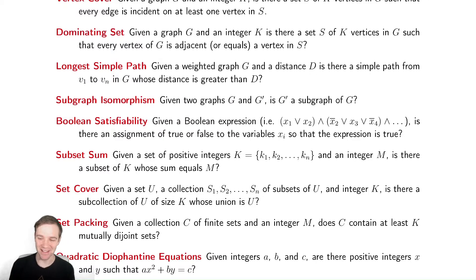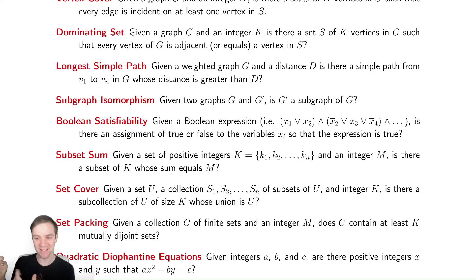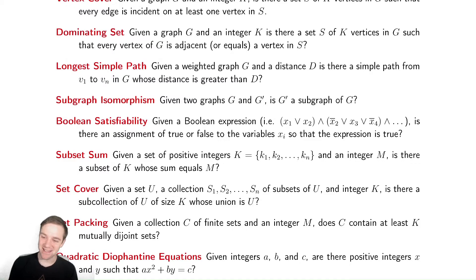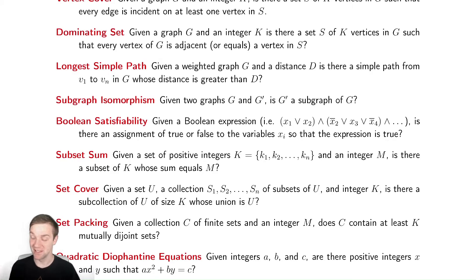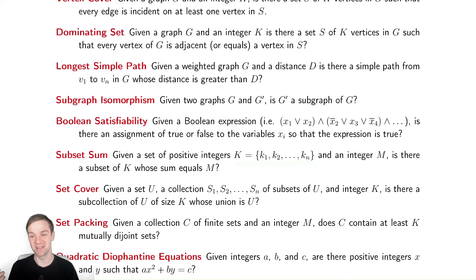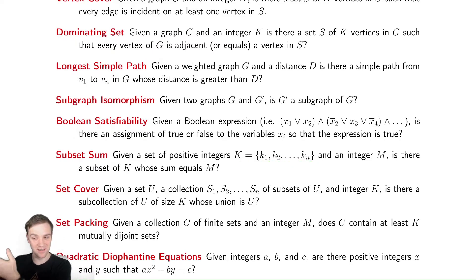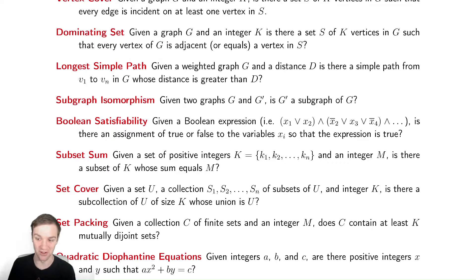That seems like it should be easy — it's a foundation of computer science logic and circuits. Maybe not. It turns out to be really hard. Another problem that sounds really easy: given a bunch of numbers and an integer, can I find a subset of those numbers that adds up to that integer? Seems like it should be really easy — really hard. No polynomial time algorithm to do it.